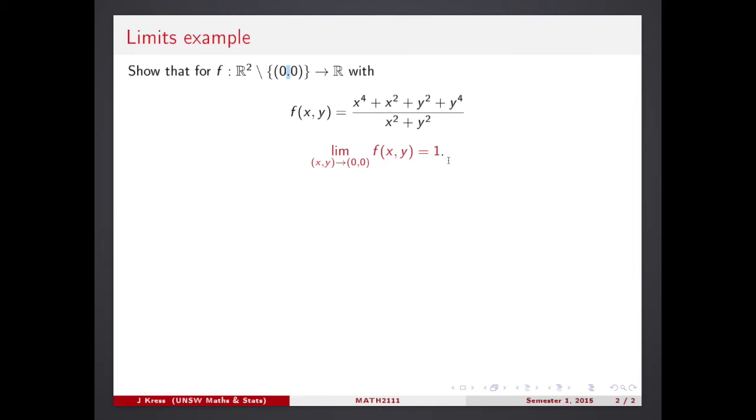So we claim that the limit is one. We can check that. Look at this, how we check that. We compute the distance from f value to 0.1, the value of the claimed limit. That's the distance. Because it's the numbers, the Euclidean distance is just simply absolute value of a difference. Here it is.